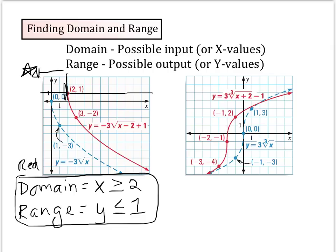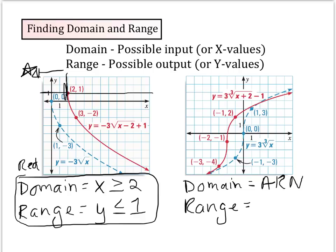For the cube root graph, what are the possible input values? For both the domain and the range, the answer is all real numbers. Because the curve continues on forever in both directions, and the same is true for the range — all real numbers.